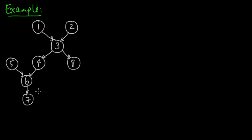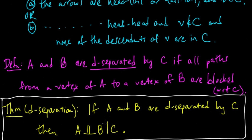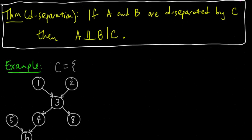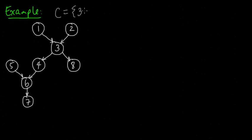So this is a nice little graph. Let's condition on something — let's condition on vertex 3. So C is the set we're conditioning on, and we're going to think about sets A and B that are d-separated by C. C here will be just vertex 3. I'm associating random variables X1 up to X8 with each of these vertices. Following the convention of shading the thing we're conditioning on, we'll shade vertex 3.